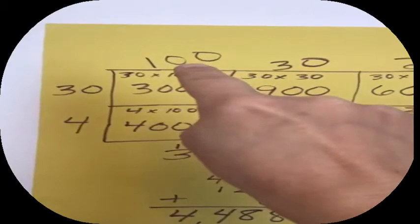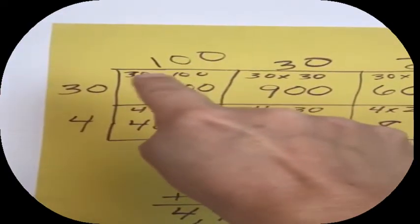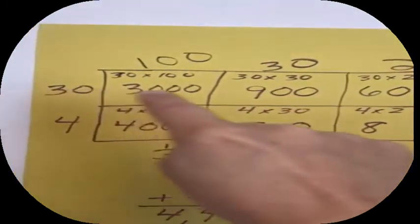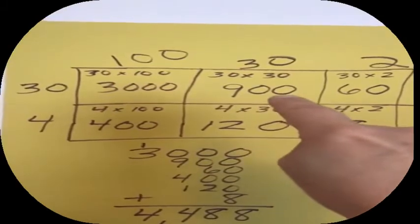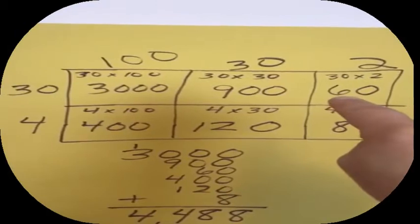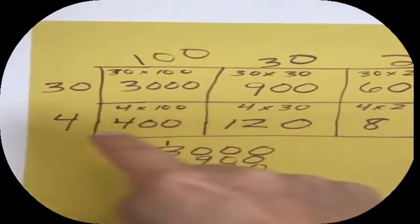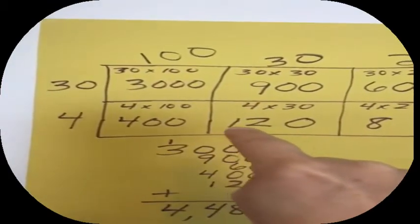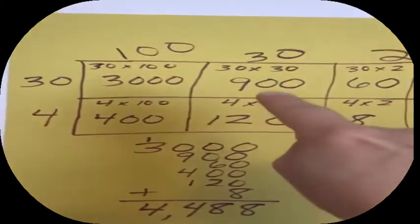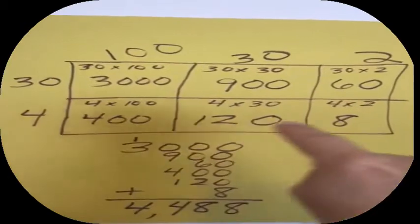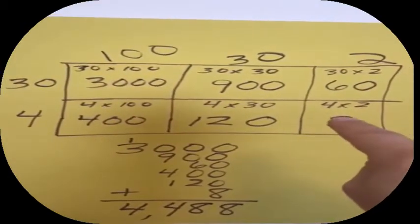This box is thirty times one hundred, which is three thousand — one times three is three and there are three zeros. This box is thirty times thirty, which is nine hundred. This box is thirty times two, which is sixty. Now I go down to the four row: this box is four times one hundred, which is four hundred. This box is four times thirty, which is one hundred twenty.